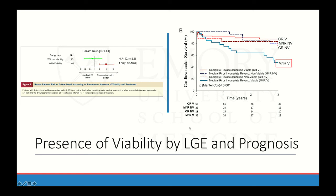When looking at viability and prognosis, a study examined four groups: those who were viable and received medical treatment, those who were viable and completely revascularized, and those who were non-viable receiving either revascularization or medical treatment. The group this mattered most for were those who had viability but remained in the medical treatment arm — their risk of death was 4.5 times higher than if they had been revascularized. In contrast, those without viability did fairly well with just medical treatment and did not need revascularization.